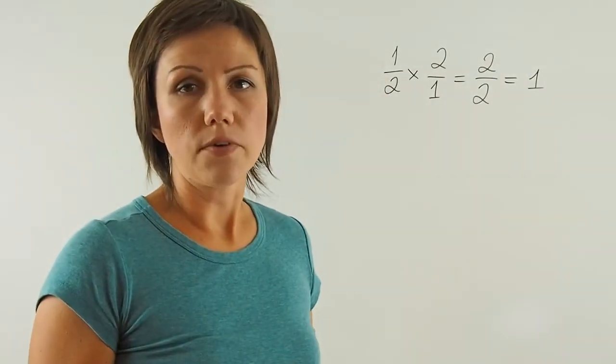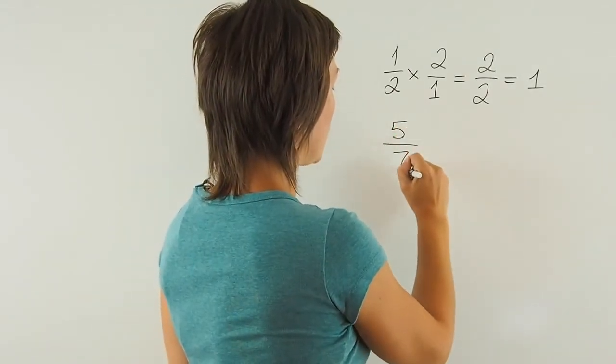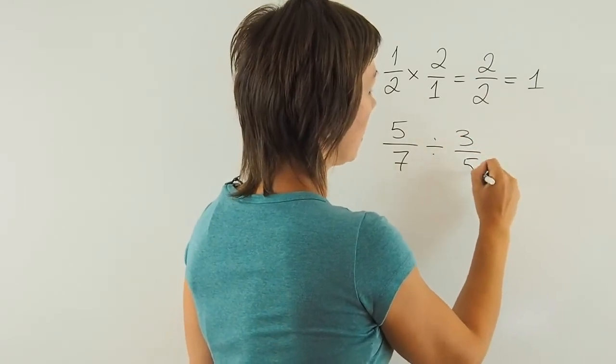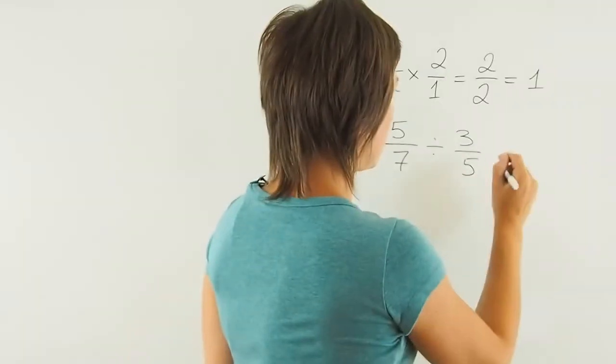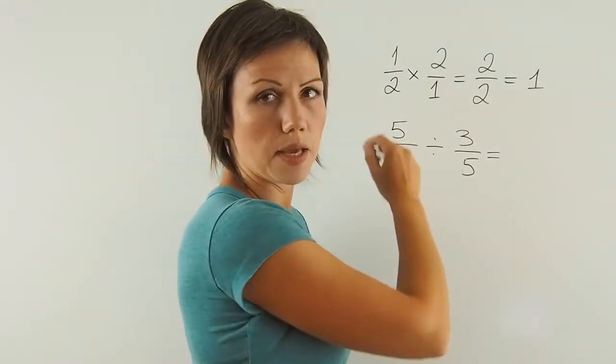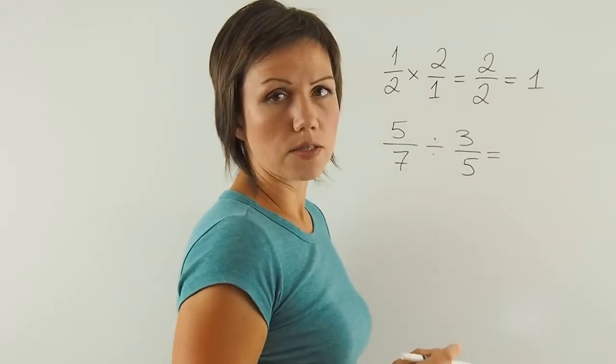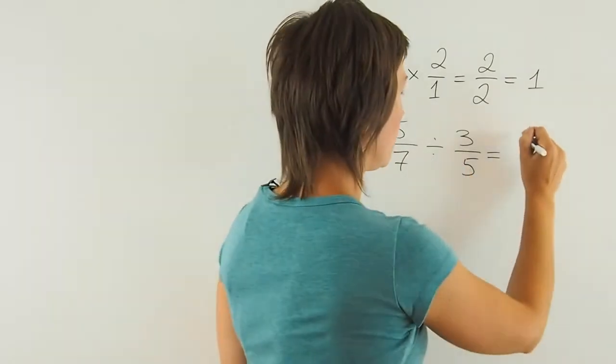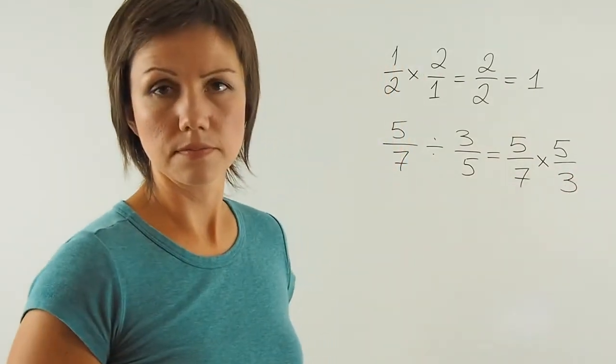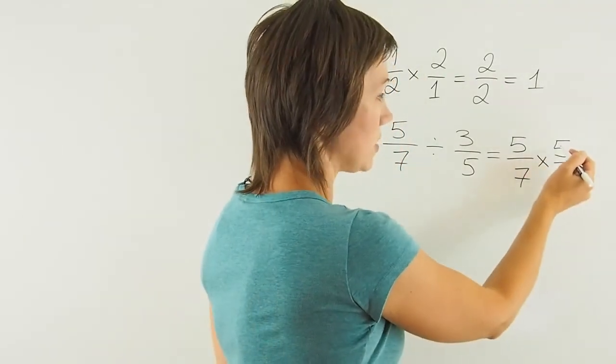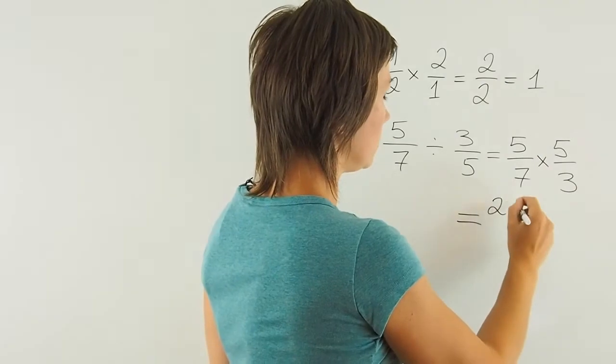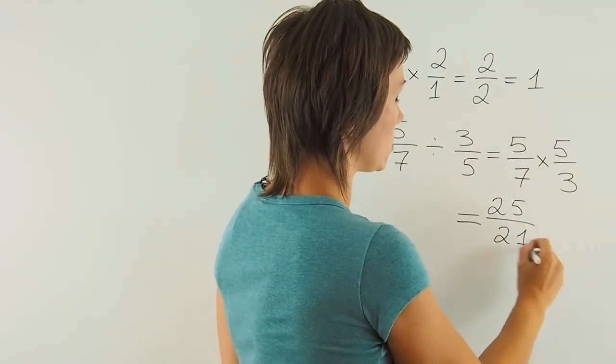So when you are dividing 2 fractions, 5 over 7 divided by 3 over 5 for example, then it's the same thing as multiplying 2 fractions, but the first one has to remain the same and the second one needs to turn into its reciprocal. So 5 over 7 times 5 over 3. Now all I need to do is just multiply numerators and denominators separately and I'll get 5 times 5, which is 25, and 7 times 3, which is 21.